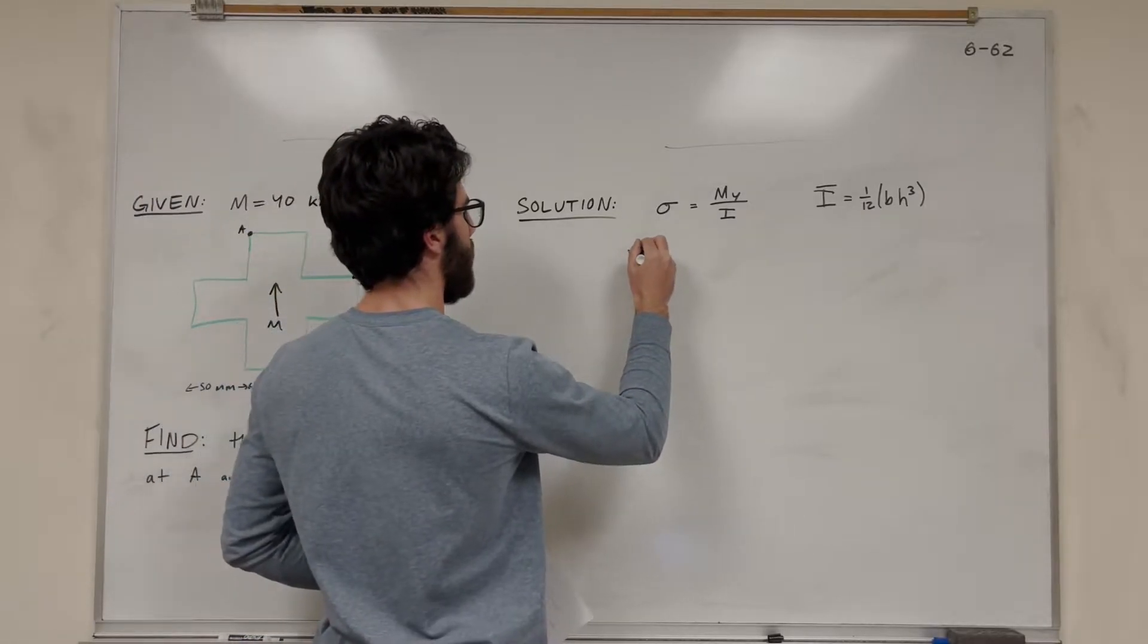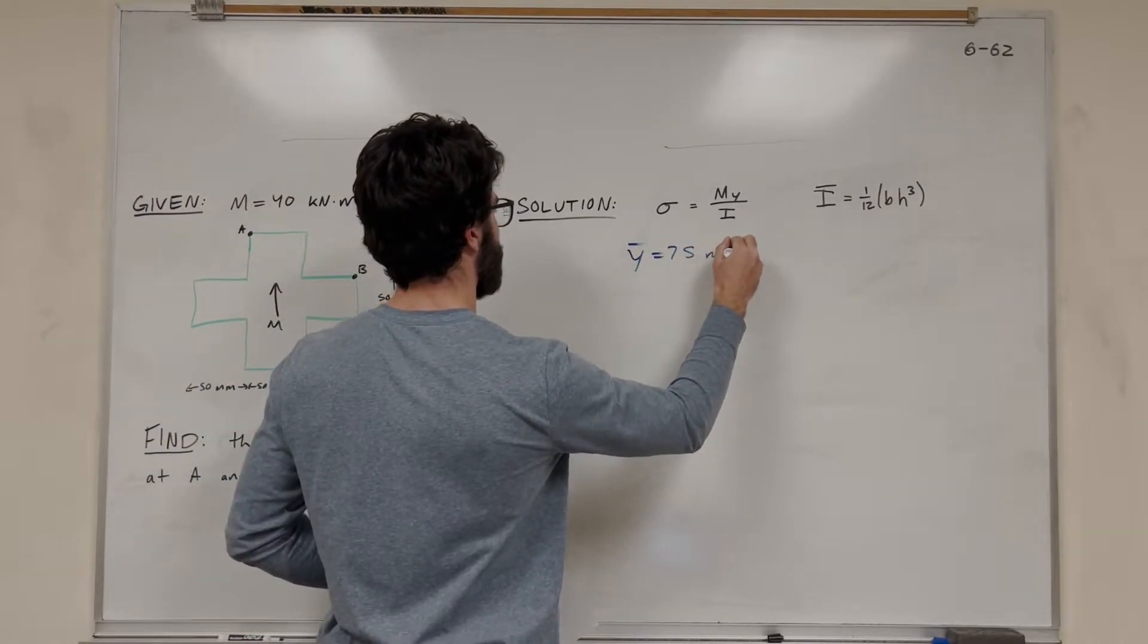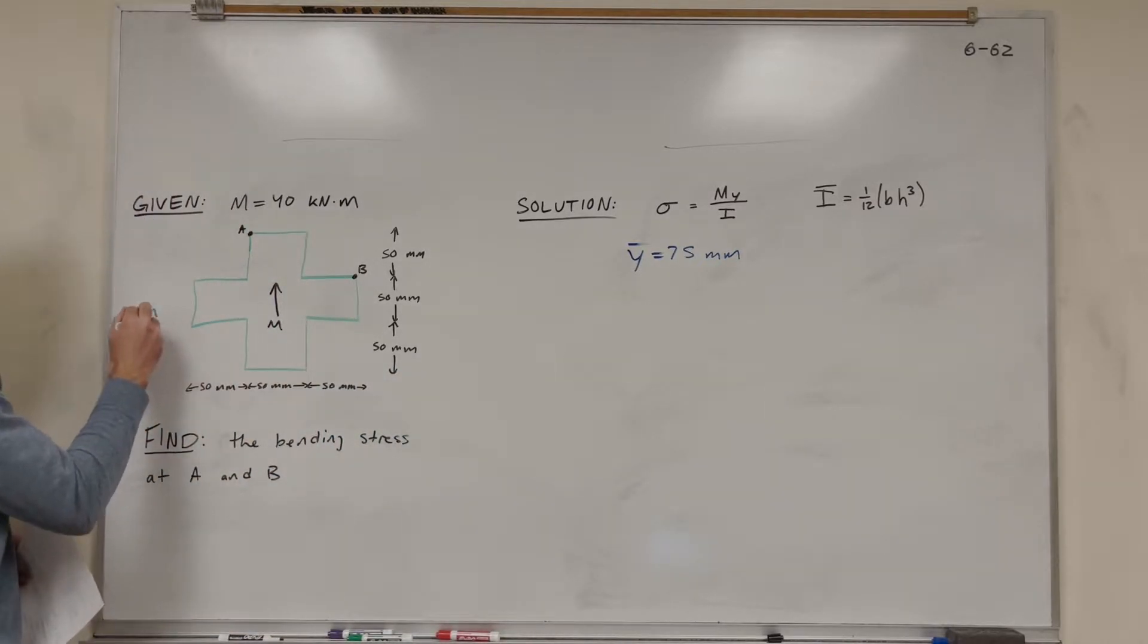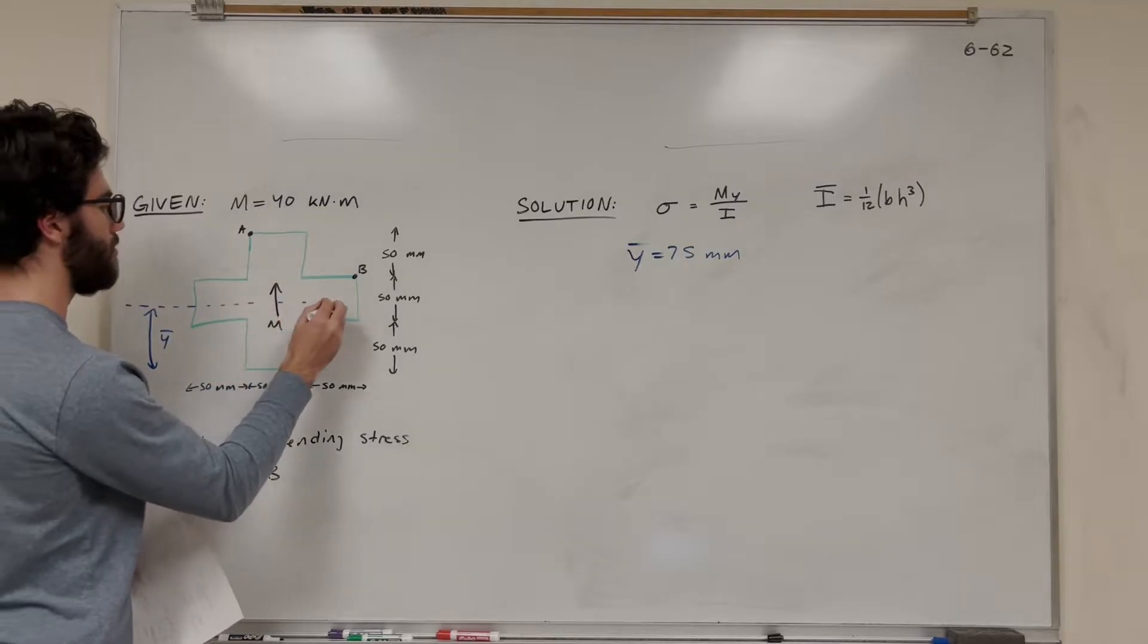Let's first write that. Y bar is equal to 75 millimeters. And so what is Y bar? Y bar is the distance from here to here. We know it's 75 millimeters because this shape is symmetrical. So this is going to be our center of mass for the shape.